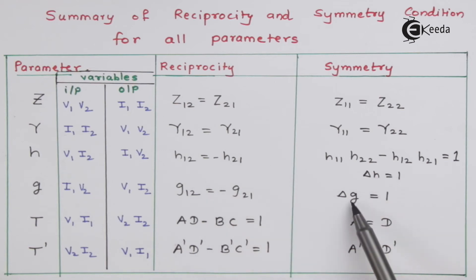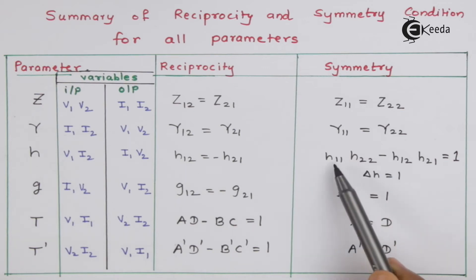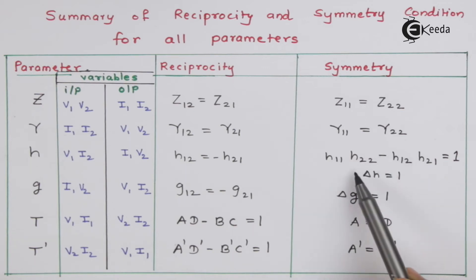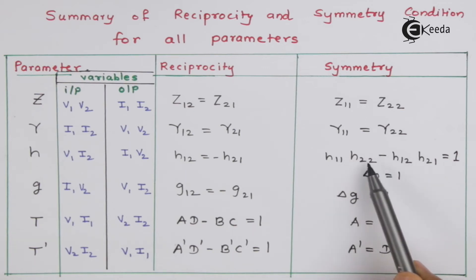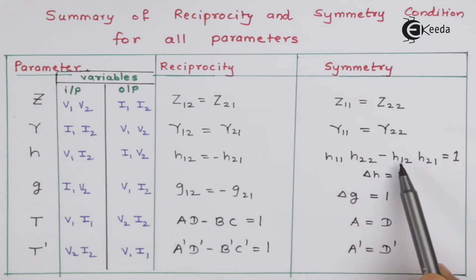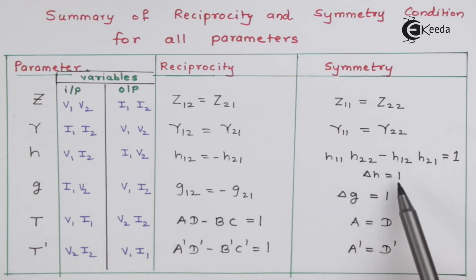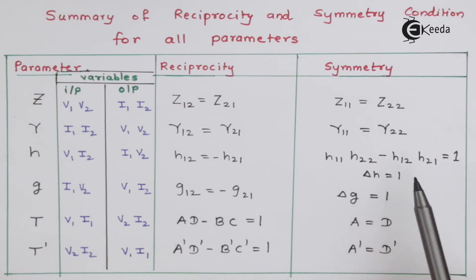You can see delta-H equal to 1 here, delta-G equal to 1. What is this delta-H? It is the determinant of the matrix — H11, H12, H21, and H22. That is the determinant; we have seen it.